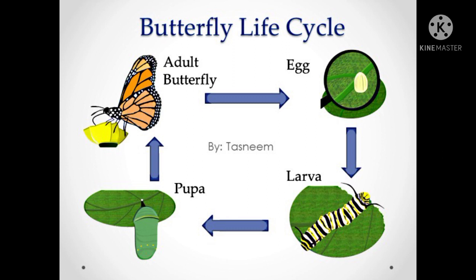When it goes to the third stage, this larva covers itself in a cocoon. When the third stage is there, the larva or caterpillar covers itself in a cocoon, and this stage is known as pupa. After this stage, when it goes to the next stage, the pupa comes out from the cocoon and looks like a butterfly.